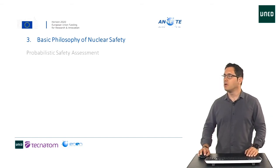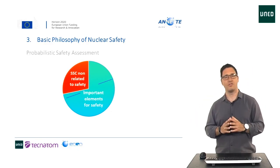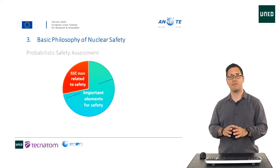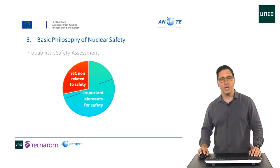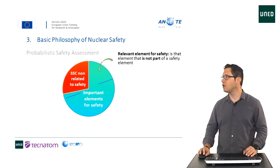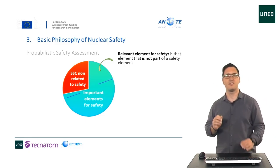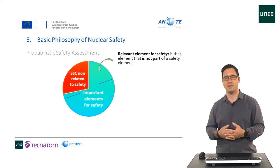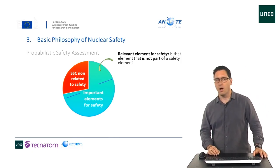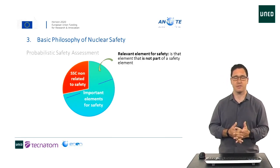Also, we can divide elements into important groups. Those elements considered safety-related and those non-safety-related. All elements relevant for safety are included in tech specs. Here we have any element that is not considered part of the safety elements, but whose operation is credited to mitigate anticipated operational events or accidents, or is used in emergency operating procedures. Also, we have all those elements whose failure can prevent safety elements from fulfilling their safety function.